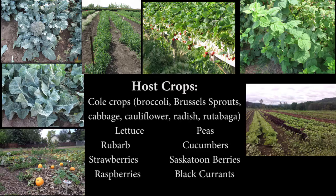Powdery mildew can occur on crops such as cruciferous crops like broccoli and Brussels sprouts, cabbage, cauliflower, radish, and rutabaga. It can also affect lettuce, peas, rhubarb, cucumbers, strawberries, saskatoon berries, raspberries, and black currants.